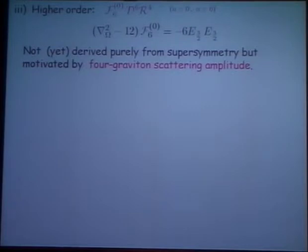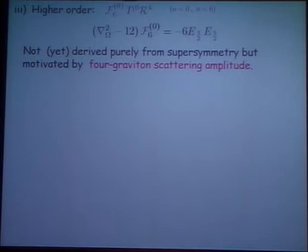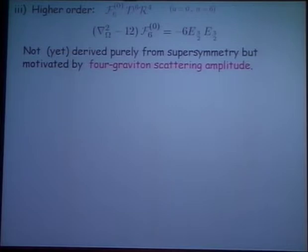A couple of years ago, van Hoven and I discovered a more complicated example which illustrates something completely new, which I showed you earlier in the most general form — in which there were source terms which were bilinear in lower order coefficients. Here's the simplest example of that: when you get to N equals six — six derivatives on R to the fourth — you start getting quadratic terms due to the lower order N equals three coefficients.